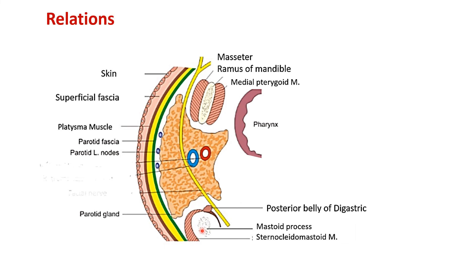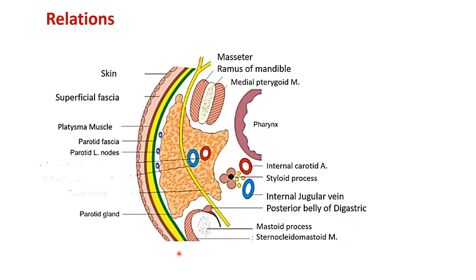The posteromedial surface is moulded around two bony projections. The first is the mastoid process, with the sternocleidomastoid on its lateral aspect and the posterior belly of digastric on its medial groove. The second is the styloid process, with three muscles attached: styloglossus, stylopharyngeus, and stylohyoid. Deeper still is the neurovascular bundle — the internal carotid artery, internal jugular vein, and the last four cranial nerves — which are separated from the parotid gland by the styloid apparatus.